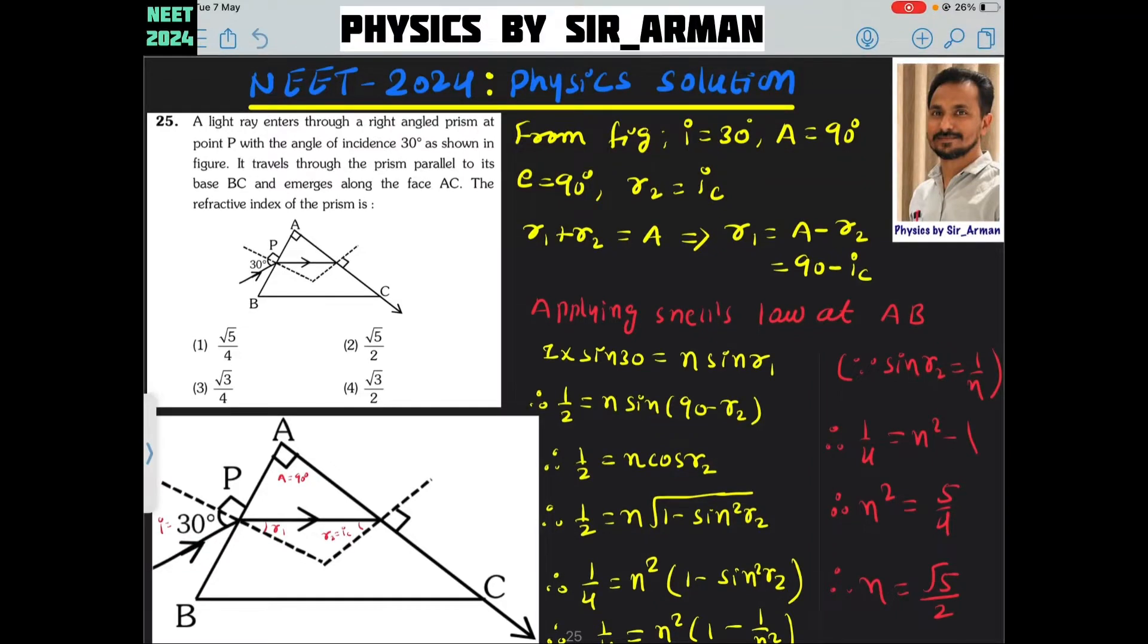Question number 25. A light ray enters through a right angle prism at point P with the angle of incidence 30 degrees as shown in figure. It travels through the prism parallel to its base BC and emerges along the face AC. The refractive index of the prism is?